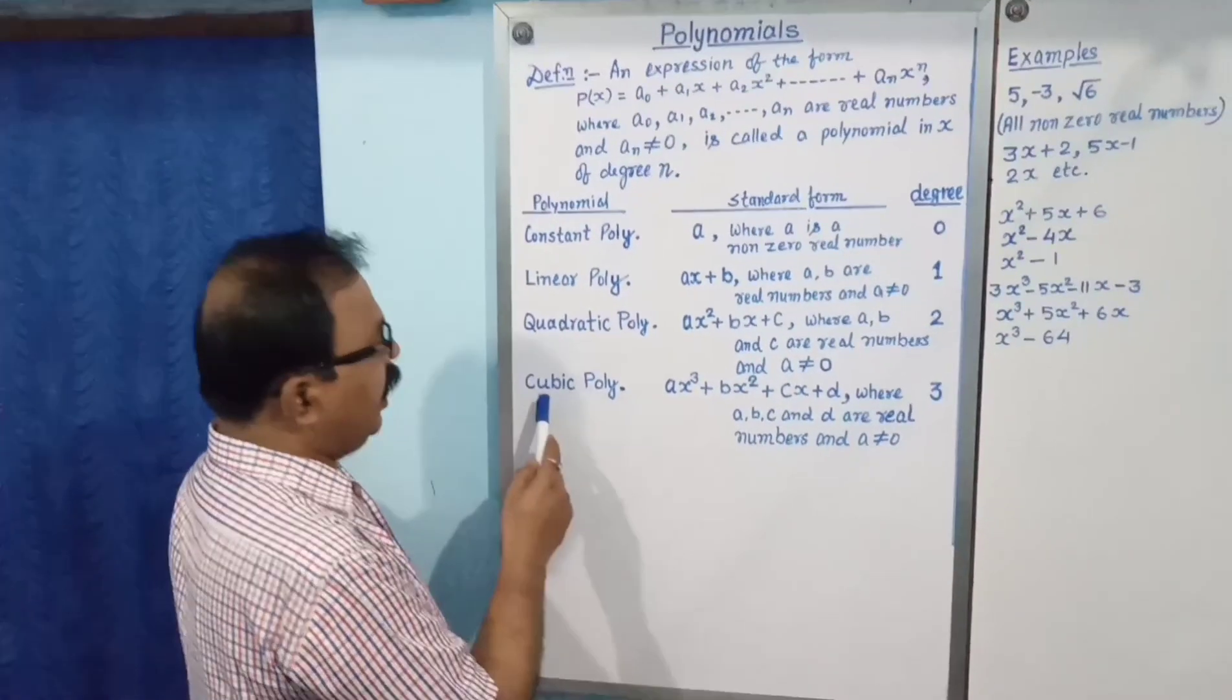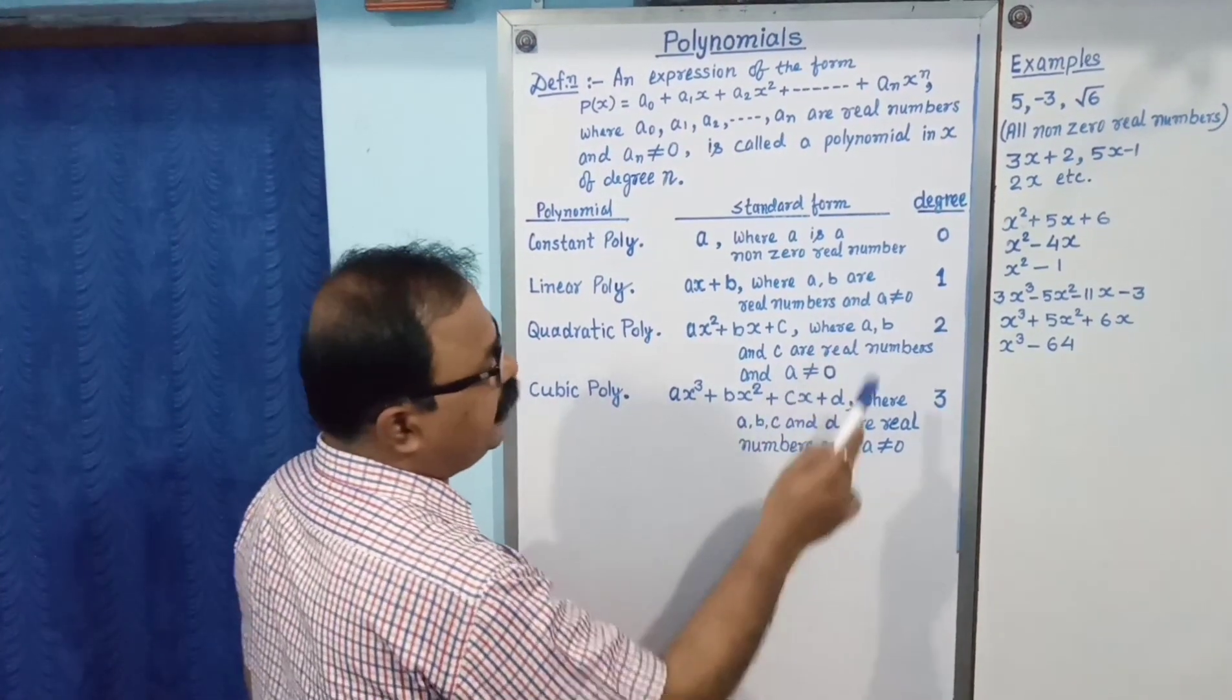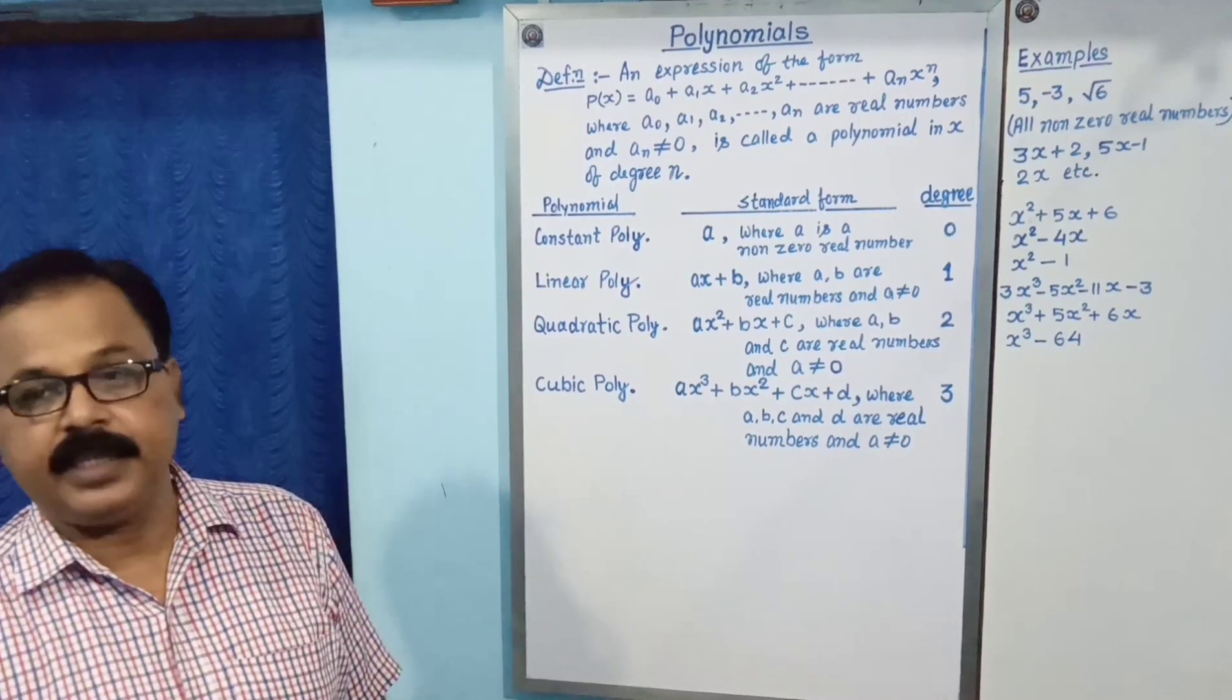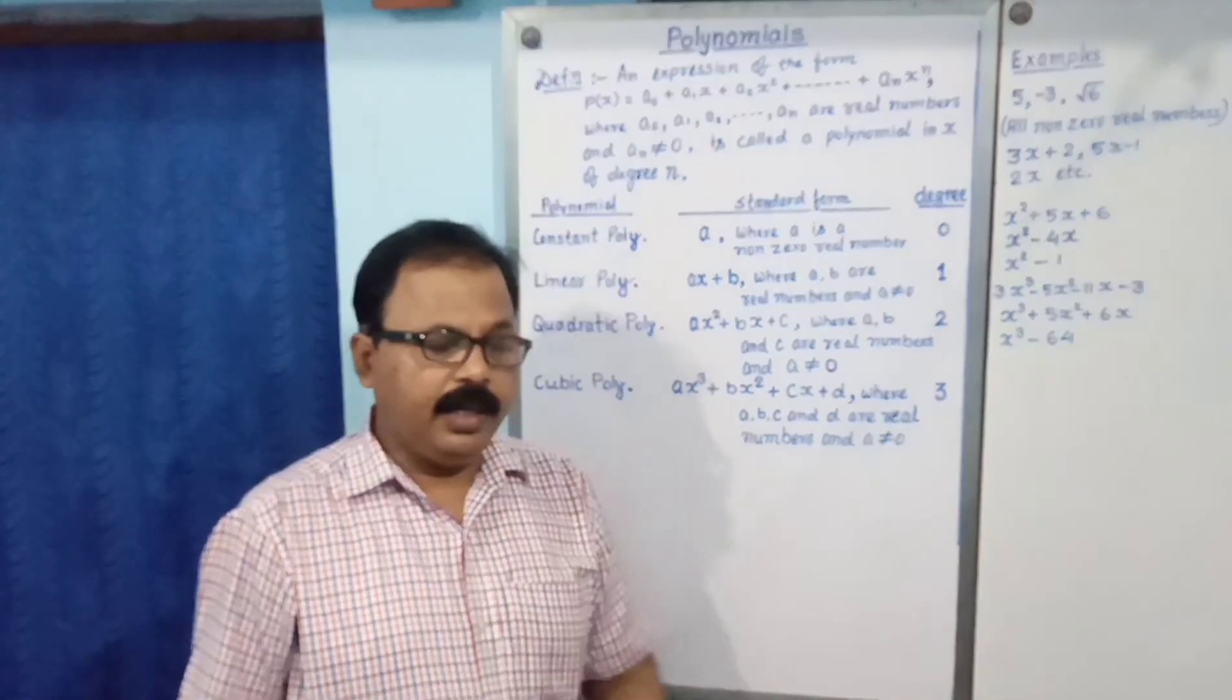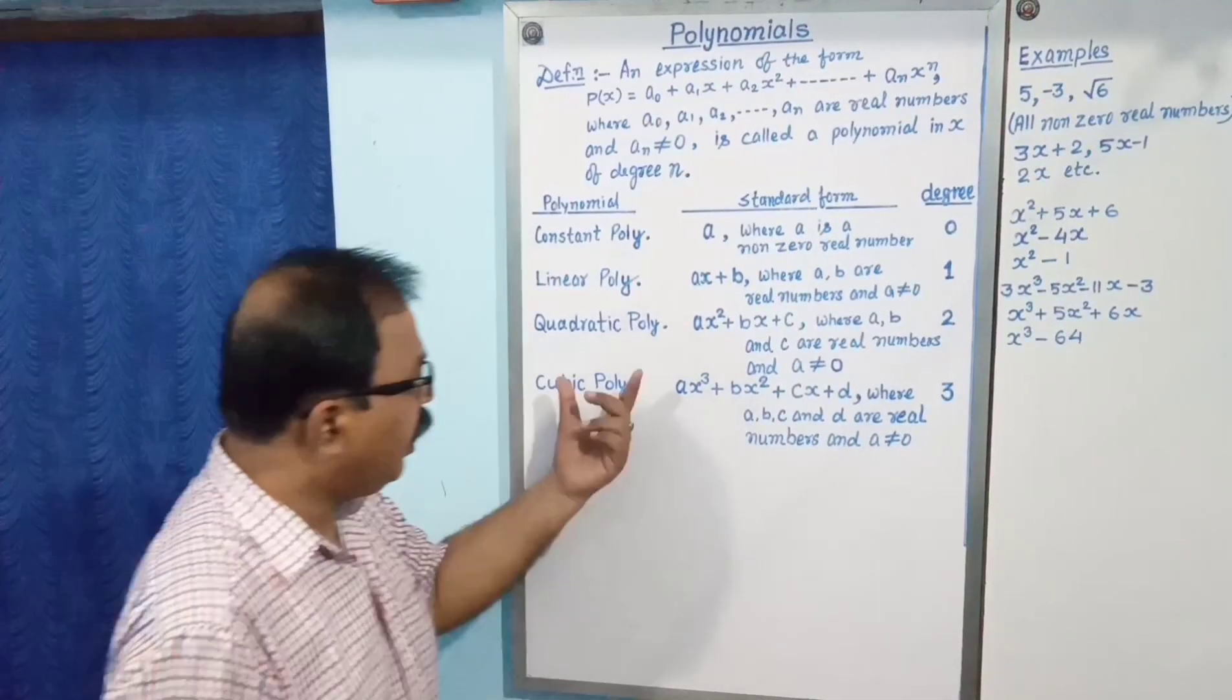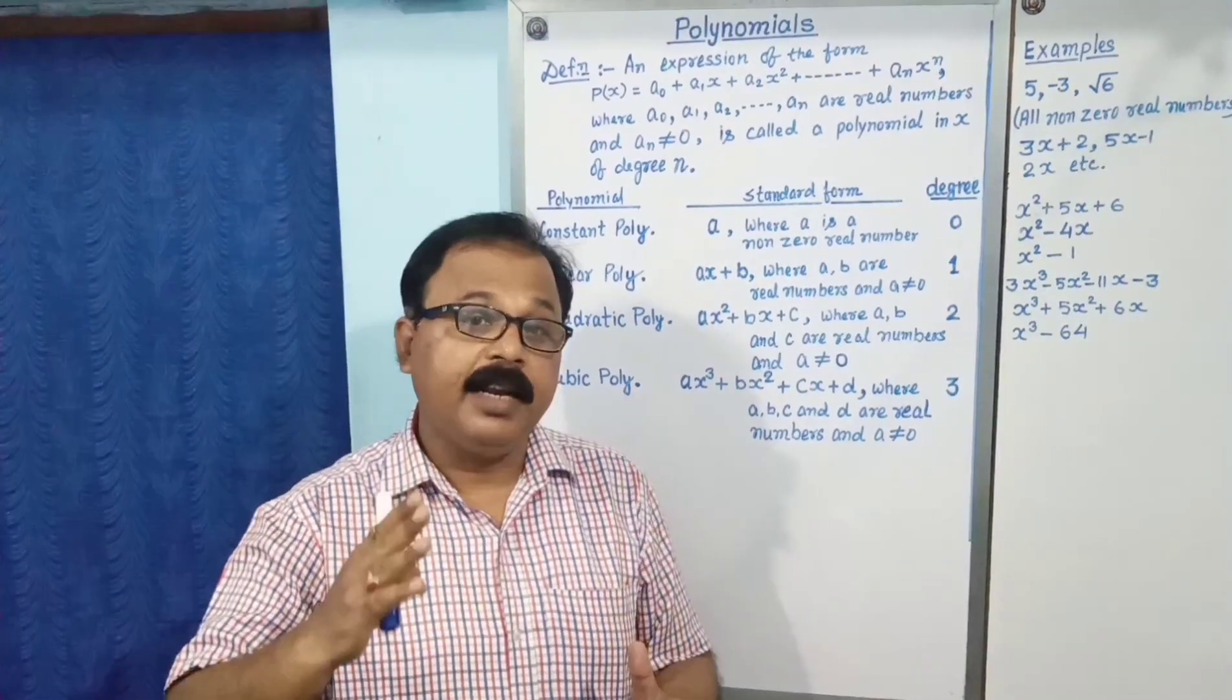In this way, cubic polynomial standard form where A, B, C are real numbers, and A not equal to 0. You know, the degree must be important in the polynomial. Number of degrees shows the number of zeros.